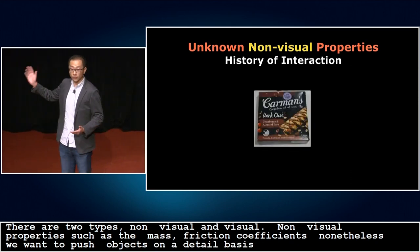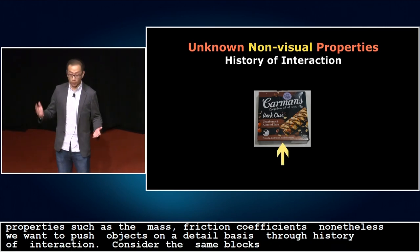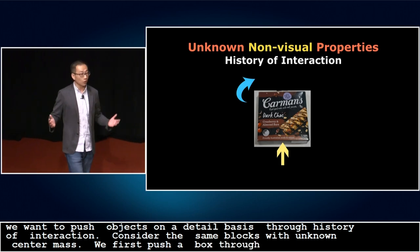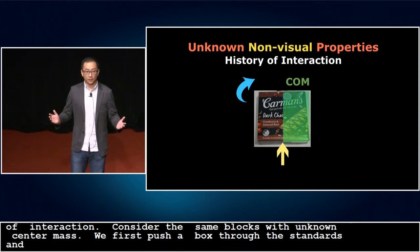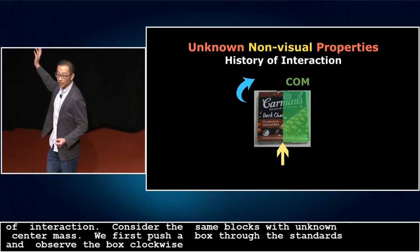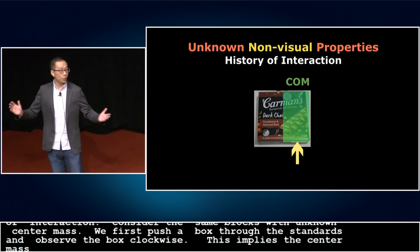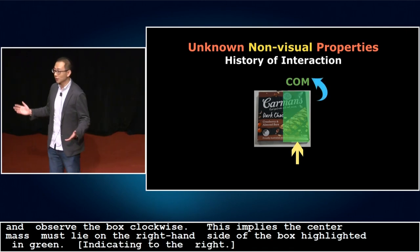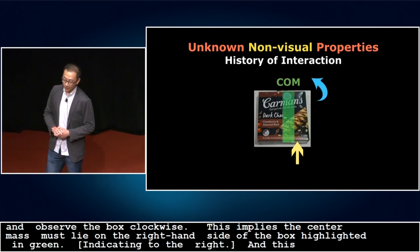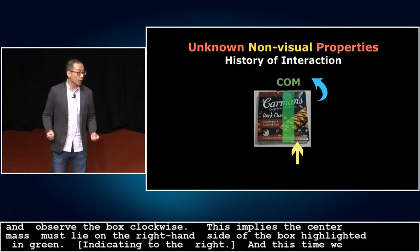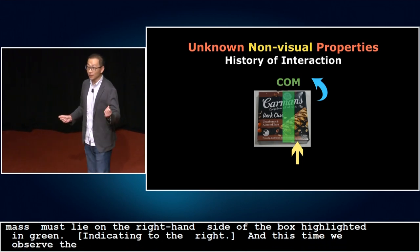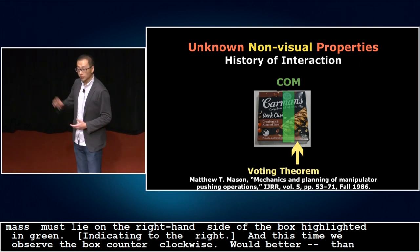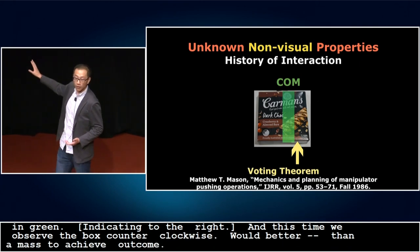Consider a box with unknown center of mass. We first push the box through its geometric center and observe the box rotating clockwise, implying the center of mass must lie on the right-hand side, highlighted in green. We push for a second time at the three-quarter point along the box, and this time we observe the box rotating counterclockwise. We can now further narrow down the possible locations of the center of mass. With better estimation, we select more efficient actions to achieve the desired outcome. This observation is supported by the voting theorems from Mason's early works.